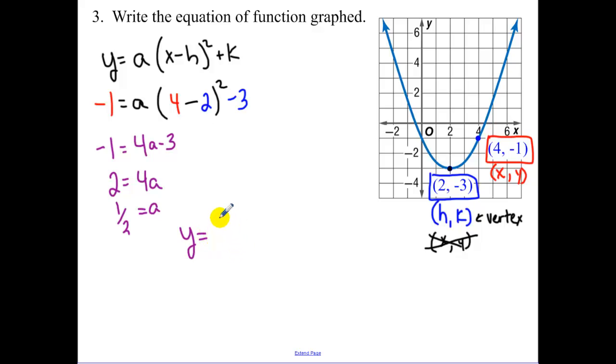So now we write in vertex form. Y equals—every equation has a y equals when I'm writing a quadratic. Now fill in your h and fill in your k. So notice how we have an x and a y. I didn't plug in that point for my x and my y because that's a specific point on the graph. I want our general equation, which is this one right here.